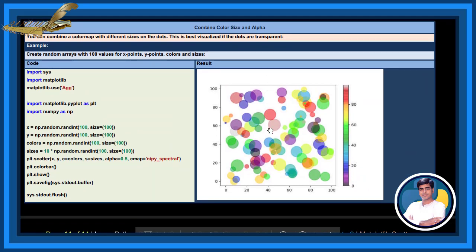Combine color, size, and alpha. You can combine the color map with different sizes on the dots. This is best visualization if the dots are transparent. See here, the dots are transparent. See, pink, blue, green, everything. So many colors were presented here.